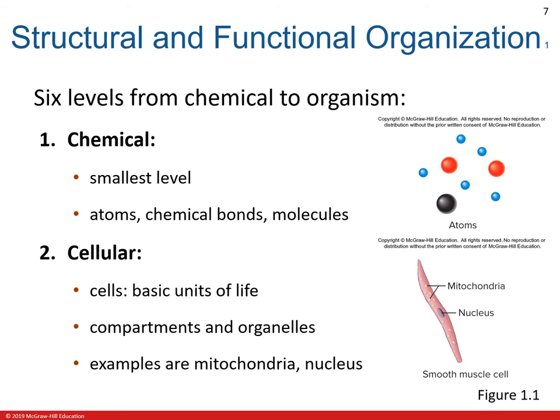The second level of organization is cellular. Cells are the basic structural and functional units of each organism, such as plants, animals, and humans. Molecules can combine to form organelles, which are small structures that make up some cells. For example, the nucleus contains the cell's hereditary information, and the mitochondria manufactures adenosine triphosphate (ATP), a molecule cells use as a source of energy. Knowledge of cell characteristics and their variations is essential to a basic understanding of anatomy and physiology.